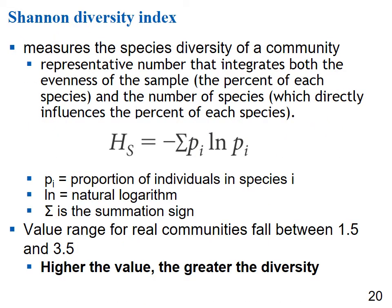The Shannon diversity index measures species diversity of a community, integrating both the evenness of the sample and species richness. The equation is: H = −sum of (proportion of individuals in species i) × (natural logarithm of the proportion of individuals in species i). Values for real communities fall between 1.5 and 3.5 — the higher the value, the greater the diversity.